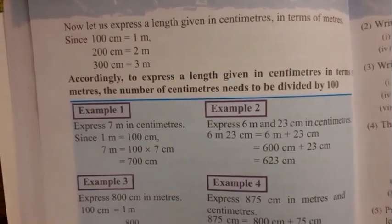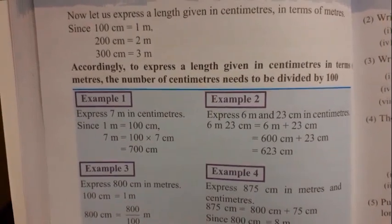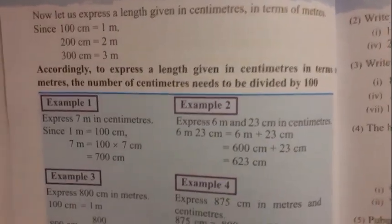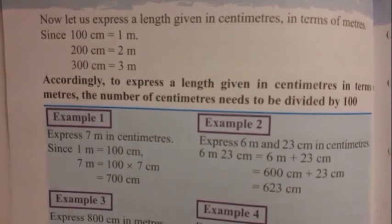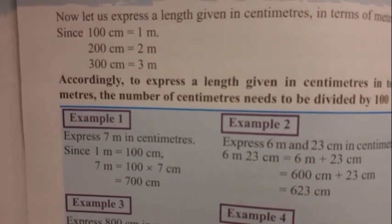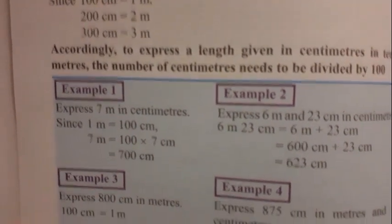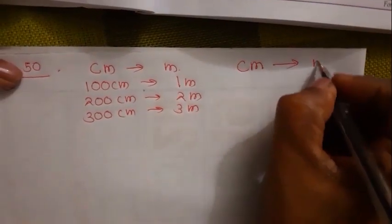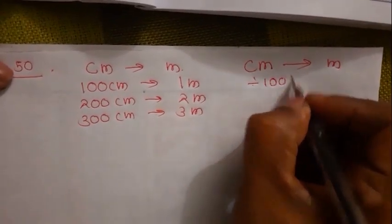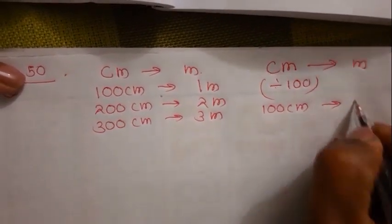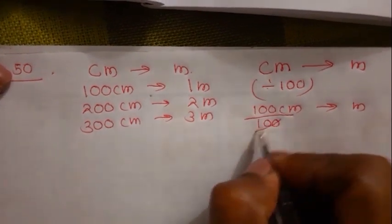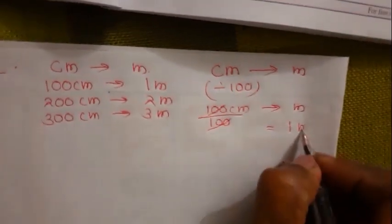Now I am going to explain page 50. We are going to convert centimeters into meters. You can see: 100 centimeters equals 1 meter; 200 centimeters equals 2 meters; 300 centimeters equals 3 meters. When you convert centimeters into meters, you divide by 100. So 100 divided by 100 gives 1 meter.